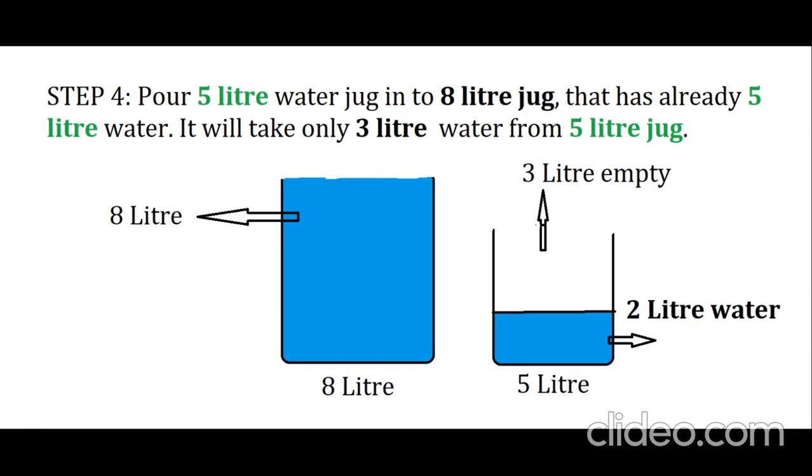Now in step 4, pour the water from the 5-liter into the 8-liter jug. The 8-liter will be completely full, and the 5-liter will have 2 liters of water remaining.